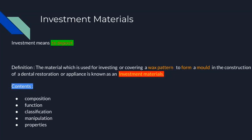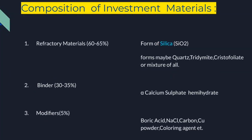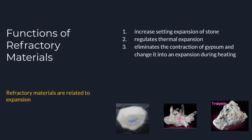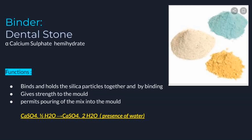In this topic we will focus on composition, function, classification, manipulation, and properties of investment material. This material contains primarily: one, refractory material; two, binder; and three, modifiers. Refractory material is in the form of silica — mainly silicon dioxide. Forms may be quartz, tridymite, cristobalite, or a mixture of all. The amount of refractory material is about 60 to 65 percent. Its functions include: increasing setting expansion of stone, regulating thermal expansion, and eliminating contraction of gypsum and changing it into expansion during heating.